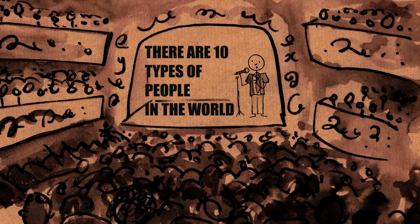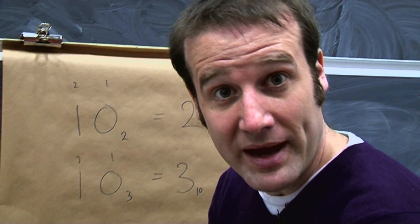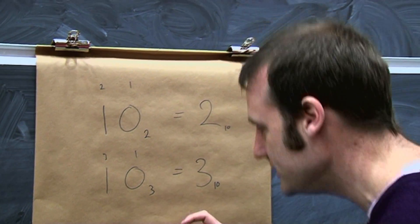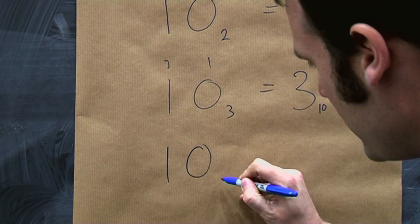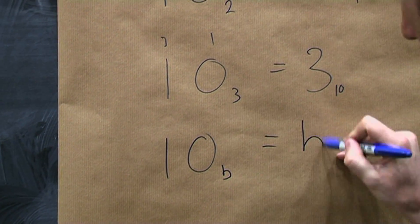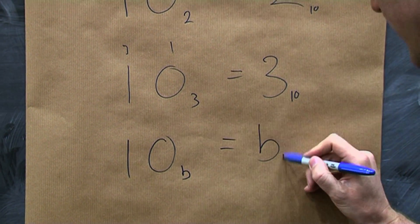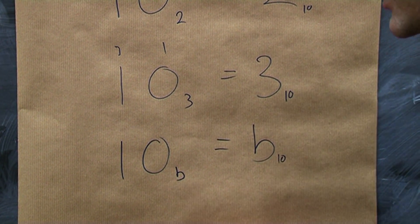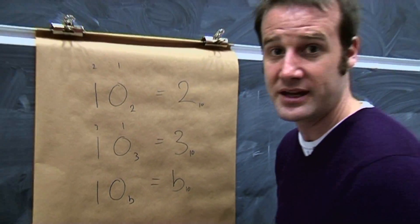There are 10 types of people in the world — you can generalize it to any base. 1, 0 in base B is going to equal B in base 10. There's an infinite set of these jokes.